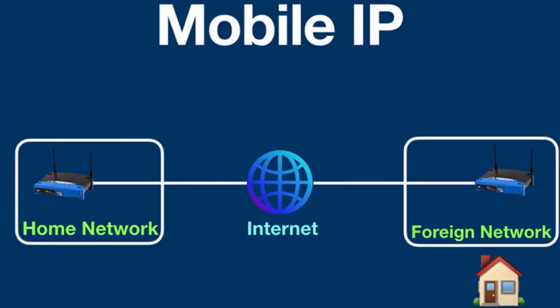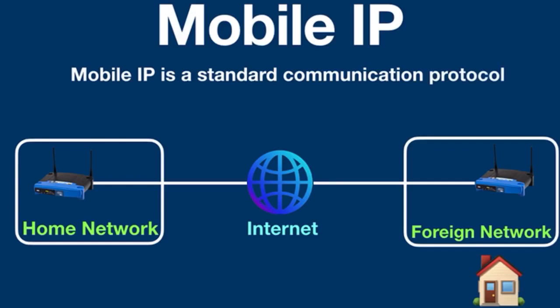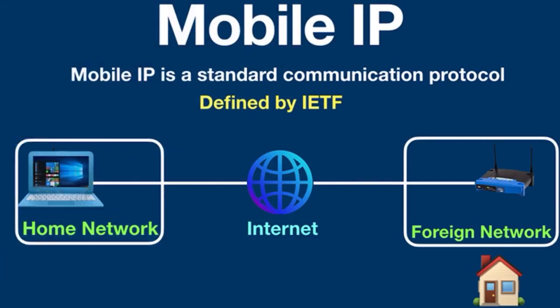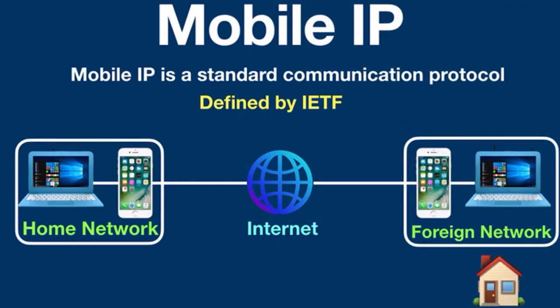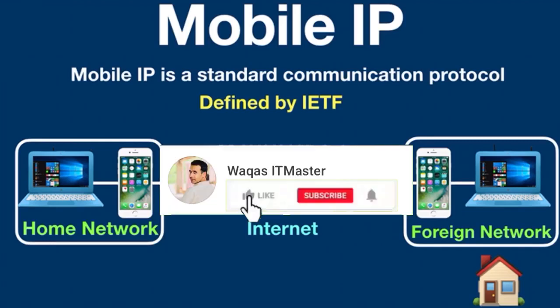In the last video we talked about Voice over Internet Protocol. Today we are going to talk about Mobile IP. Mobile IP is a standard communication protocol that allows users to move from one network to another network with the same IP address. It ensures that communication will continue without the user's connection being dropped. Mobile IP enables laptops and computers to stay connected to the internet while maintaining an existing connection and same IP address as they move from link to link. In simple IP, the device must obtain a new IP address and lose its existing connection every time it changes its point of attachment.